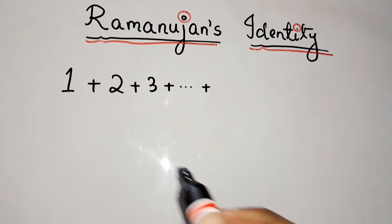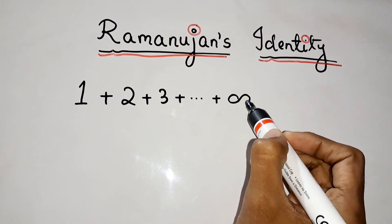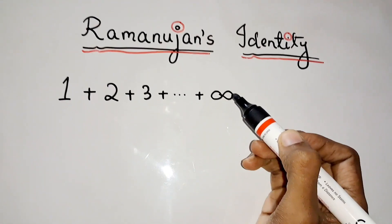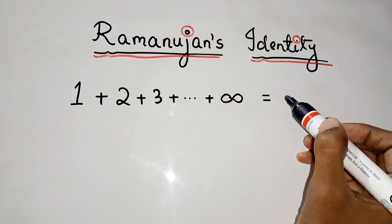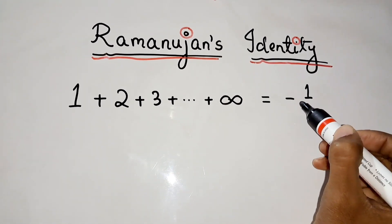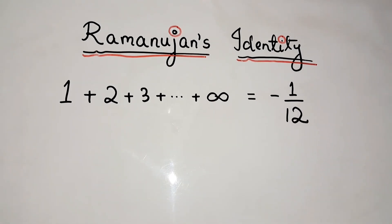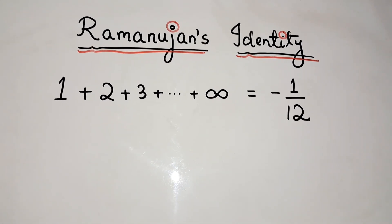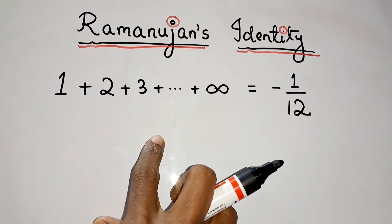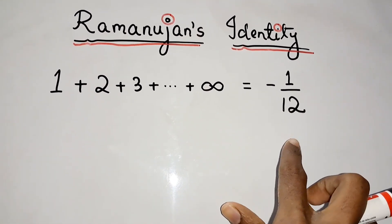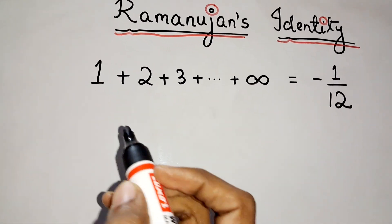So what is that? 1 plus 2 plus 3 up to infinite times — what will be the answer? What Ramanujan has said? He said that it is equal to minus 1 by 12. So how is it possible? How he has derived 1 plus 2 plus 3 up to infinity equals minus 1 by 12? There is a very simple proof. We can prove it.